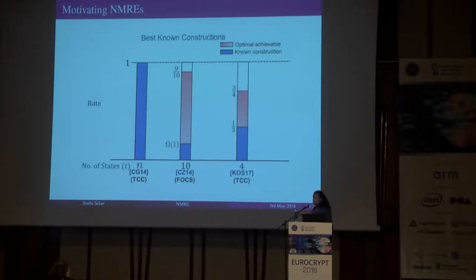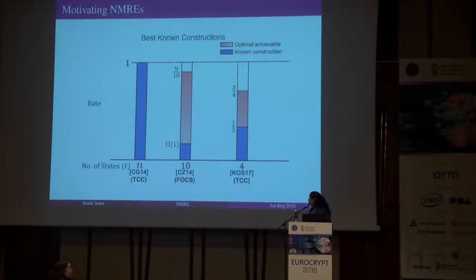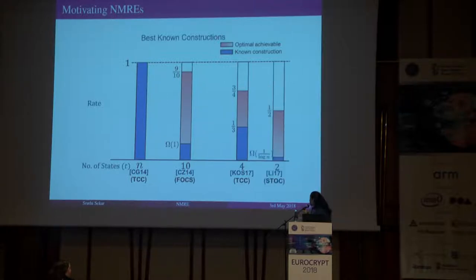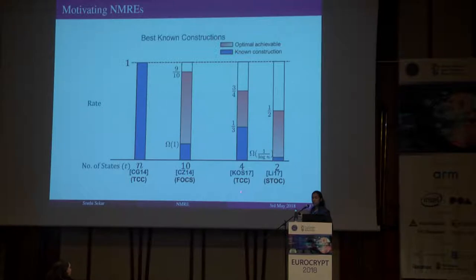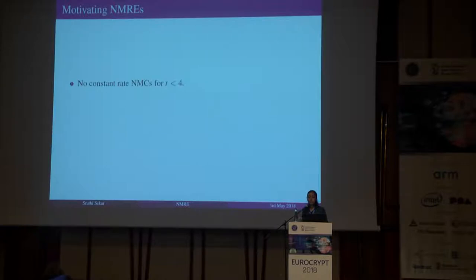Last year at FOCS, with the same set of authors, we gave an explicit constant rate non-malleable code for the 4-split state family, achieving rate 1/4. But it is still not optimal. For the two-split state family, we do not yet know a constant rate code. The best known construction is due to Li in 2017, which is an inverse logarithmic rate construction. So we do not have any constant rate non-malleable codes for T less than 4.